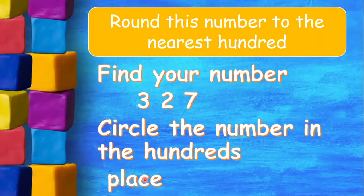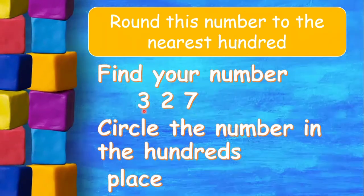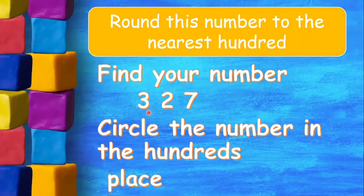Round this number to the nearest hundred. The given number is 327. Find your number — circle the number in the hundreds place. The number which is in the hundreds place is number three.